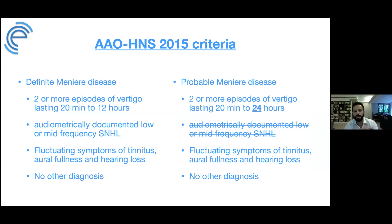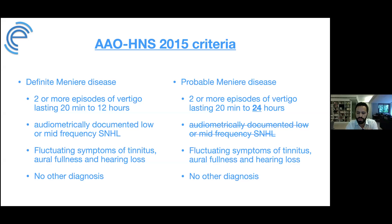Probable Meniere's disease differs in two ways: episodes can last up to 24 hours, and hearing loss has not been audiometrically documented. The patient reports hearing changes and fluctuating tinnitus, but there's no objective pure tone audiometry confirmation, so they're classified as probable.